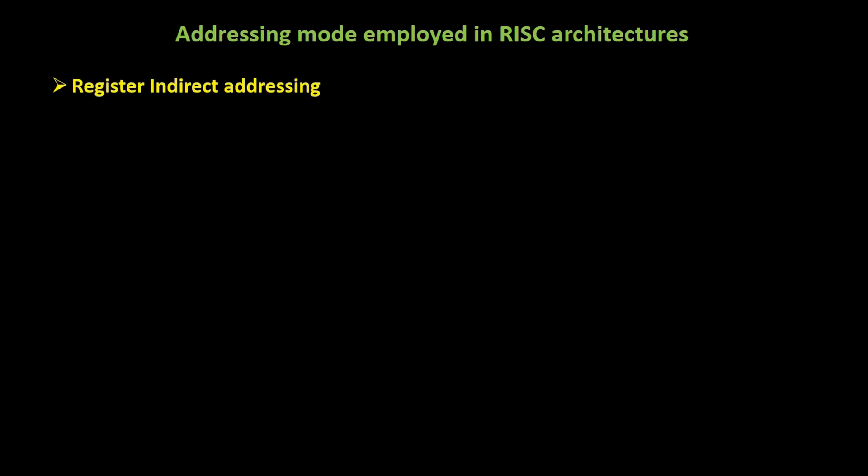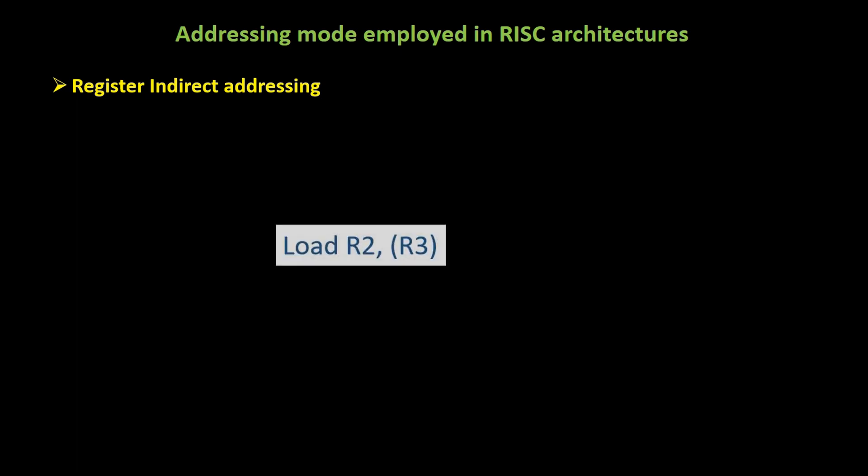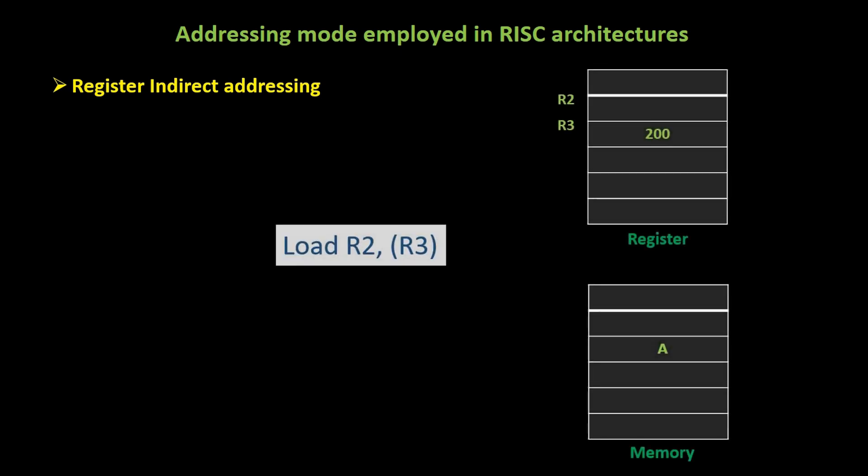Register indirect addressing is another mode, similar to pointers in high-level languages. Let's take the instruction LOAD R2, R3. Here, R2 will be loaded with the content at the memory location specified by R3.